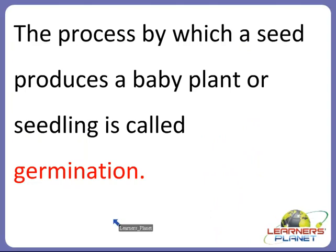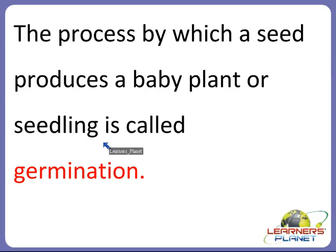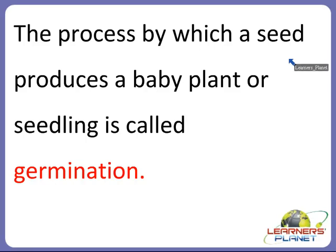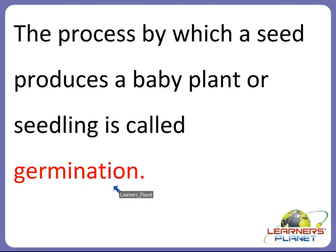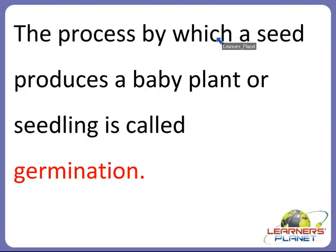So what is actually germination? We studied about seeds, and seeds produce a baby plant. The process by which a seed produces a baby plant or a seedling is called germination. A seed produces a baby plant or seedling after getting all the required factors: air, water, and warmth. That process is called germination.